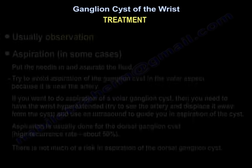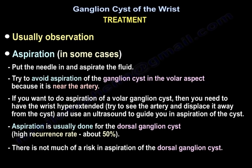The treatment is usually observation — you just watch it. In some cases you may aspirate the cyst by putting a needle in. Aspiration of the volar ganglion cyst should be avoided because it is near the artery, so ultrasound guidance is preferred. Aspiration is typically done for the dorsal cyst, which has a high recurrence rate of about 50%, but there is not much risk, so it may still be worth it.